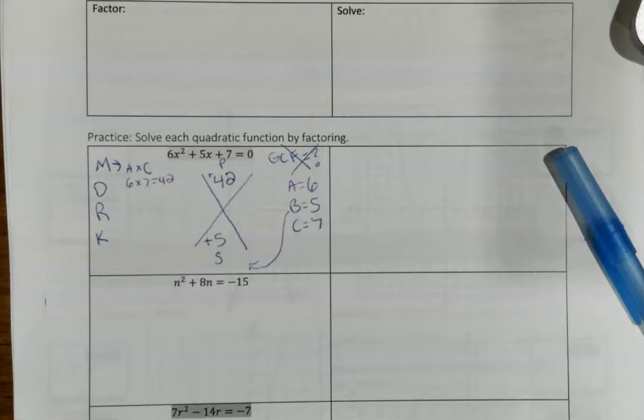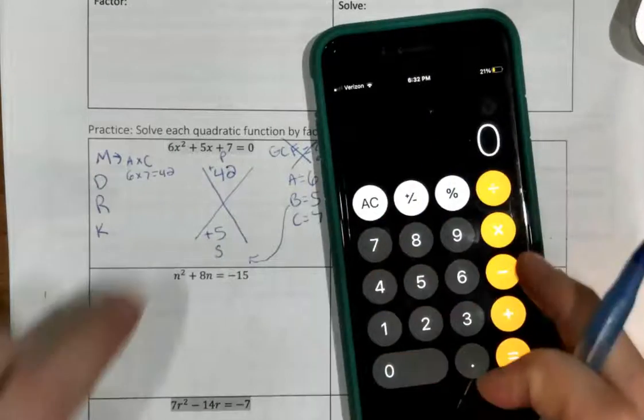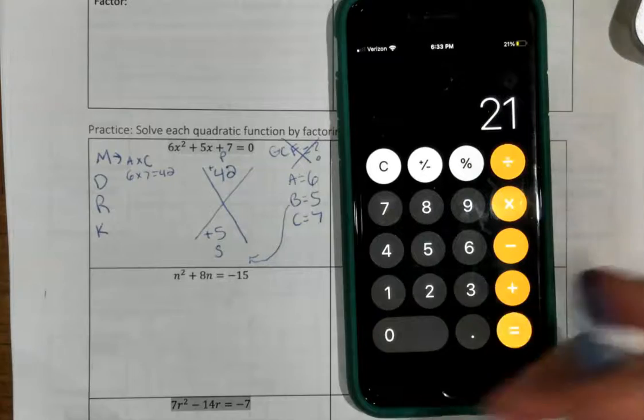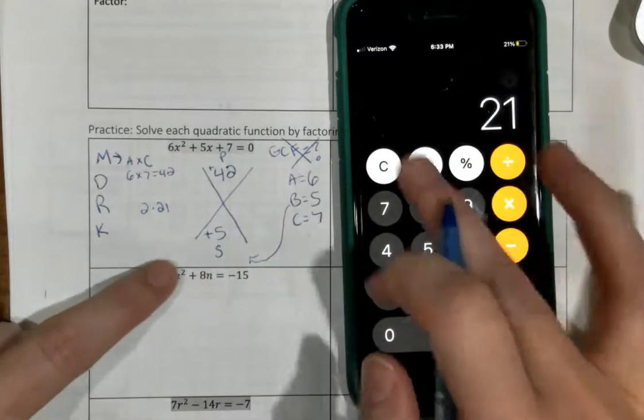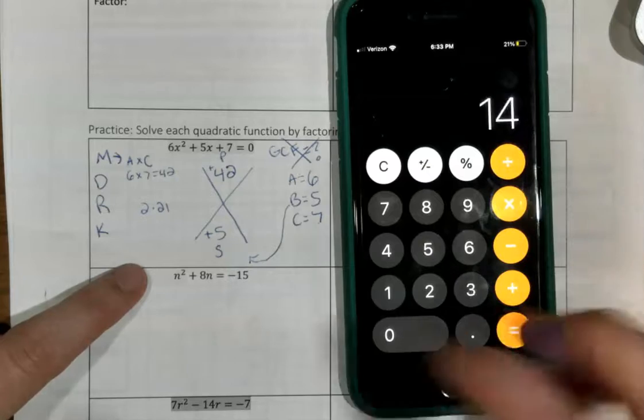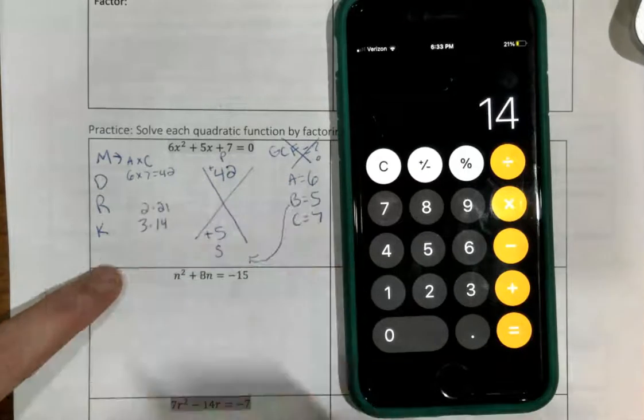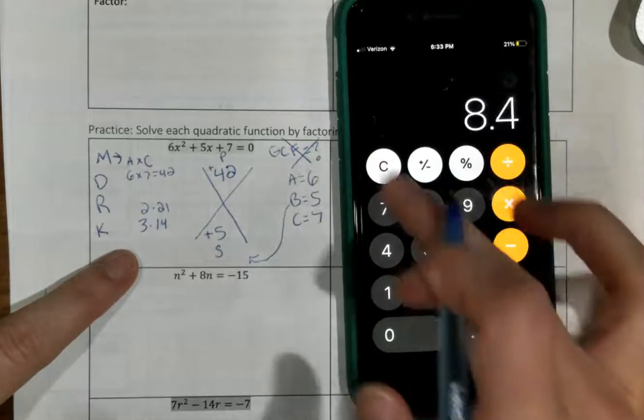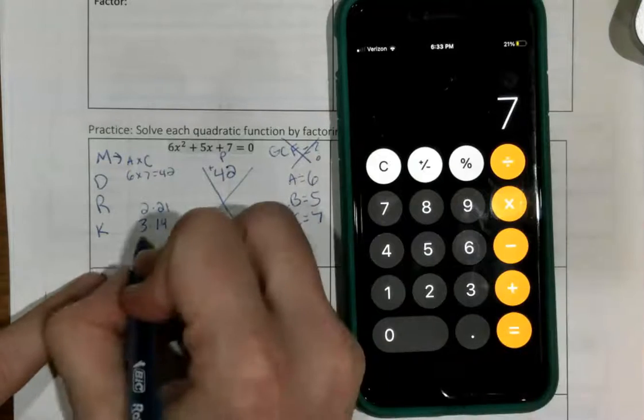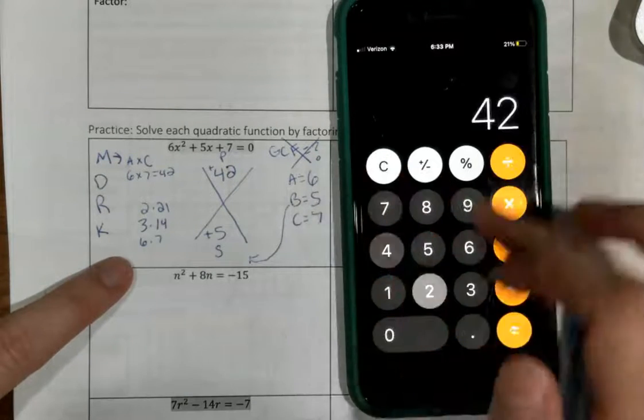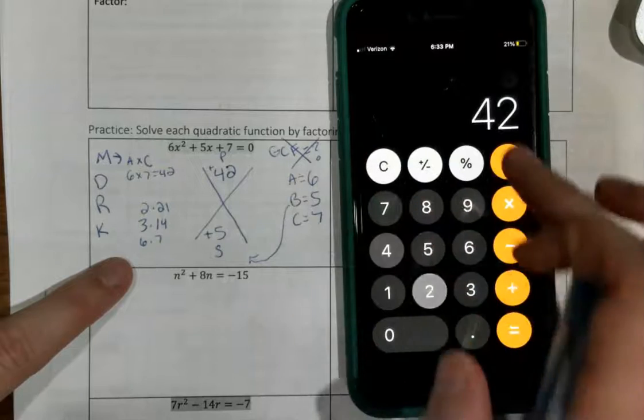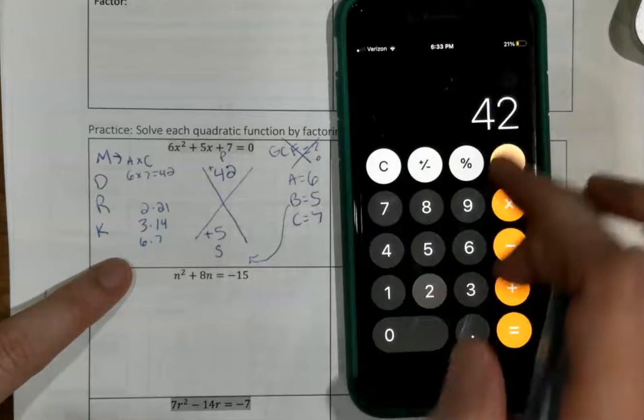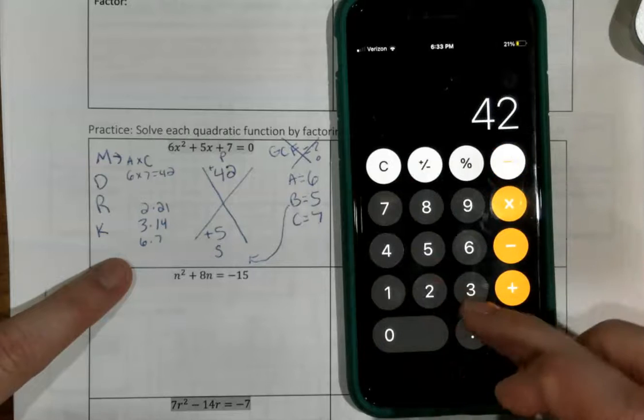I want you guys to go ahead and work your magic and come up with the two numbers that you think multiply to get positive 42 and sum to get positive 5. I hope you didn't take too long, because I don't think anybody could find any numbers that multiply to get 42 and add to get 5.